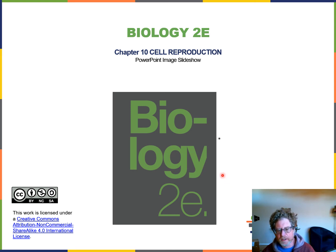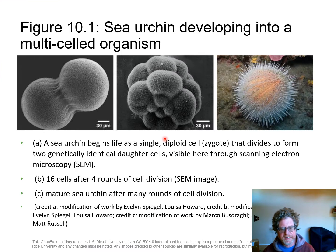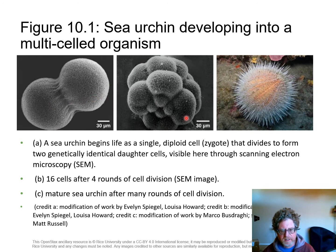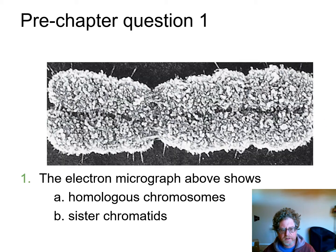This narration goes along with chapter 10 on cell reproduction. To illustrate the process of cell division, they start by looking at a sea urchin — a simple animal that reproduces sexually. A fertilized egg divides into two identical cells, then again and again until there are 16 identical cells. Eventually they specialize into the nervous system and gastrointestinal system until you have a mature sea urchin with spines. This will talk about how cells grow and divide into identical cells.